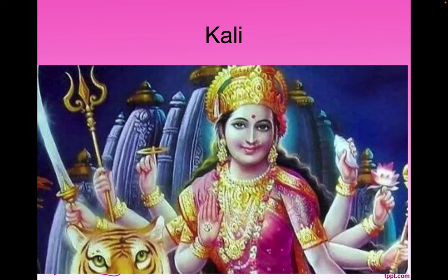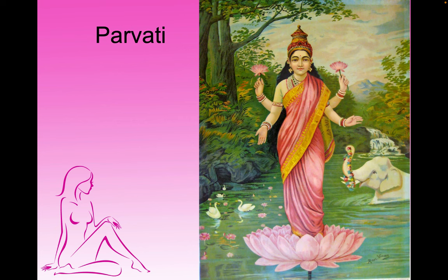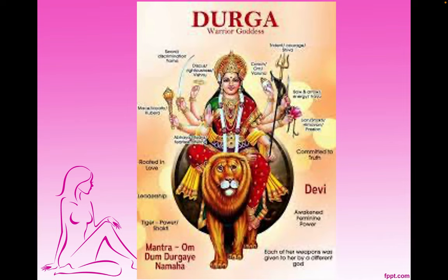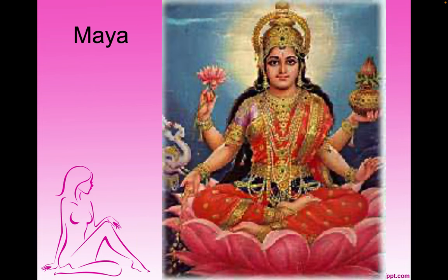The Hindu religion involves goddess worship, and many of the most powerful gods are female, such as Kali, Parvati, Durga, and Maya. According to the Hindu religion, female identity is viewed as pure, strong, and powerful. Kali has eight arms and the tiger as her spirit animal. Parvati has four arms and the elephant. Durga has eight arms and is the warrior goddess with the lion, and Maya has four arms as well.